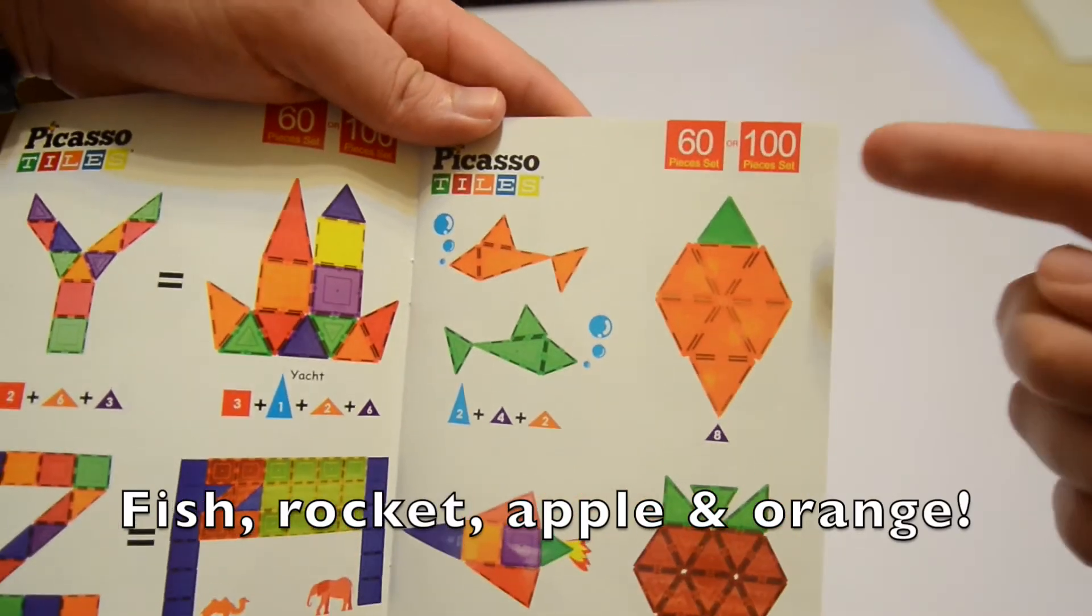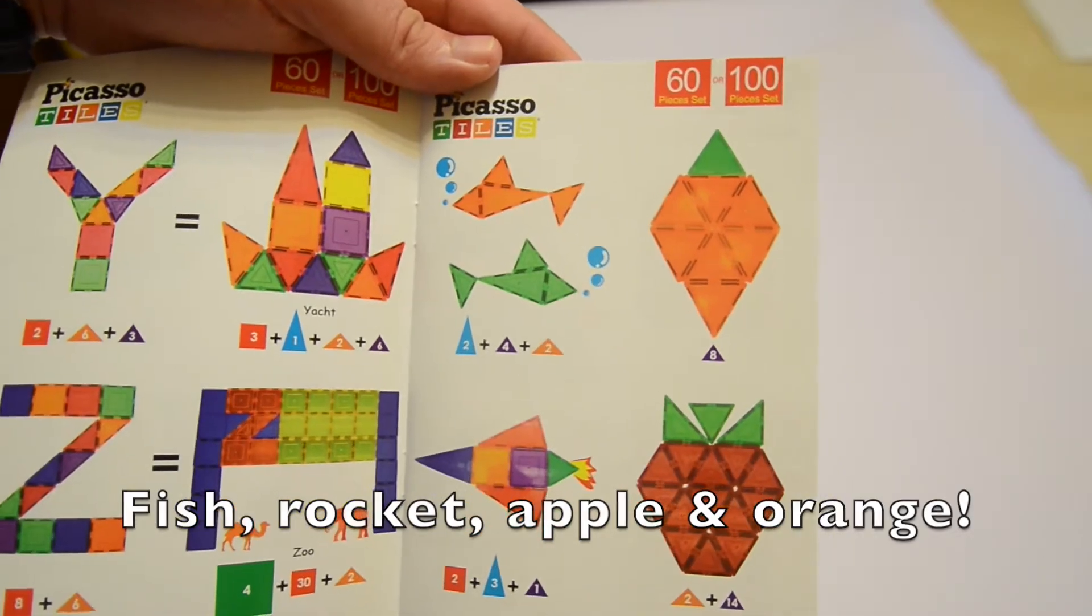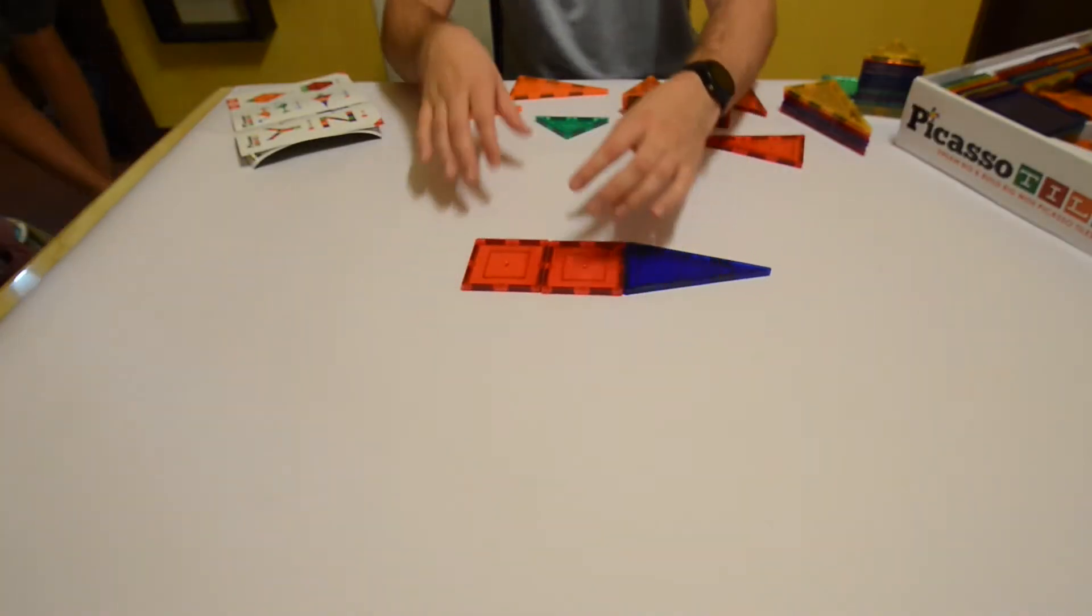Next up on page 17, we can use 60 or 100 to make fish, apples, pumpkins, and a rocket.